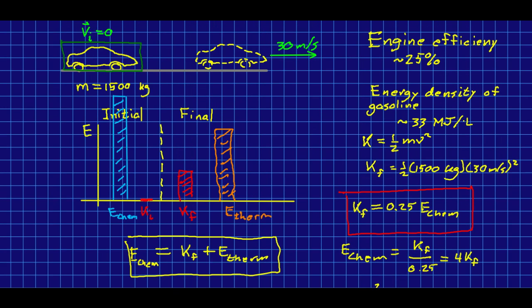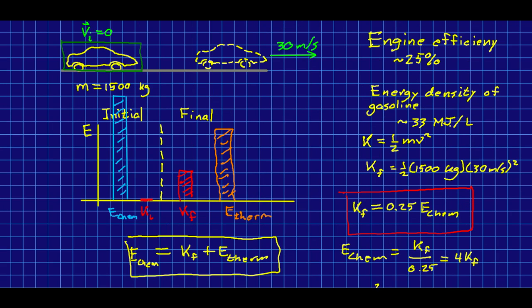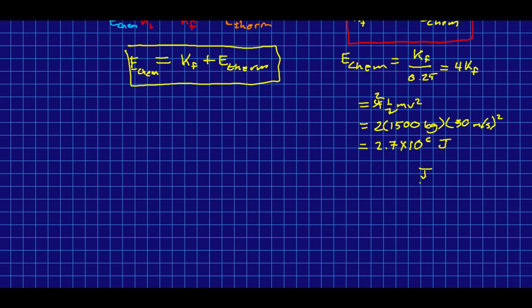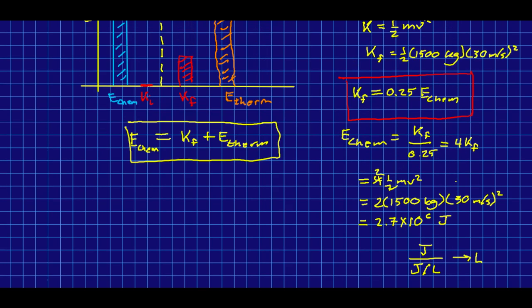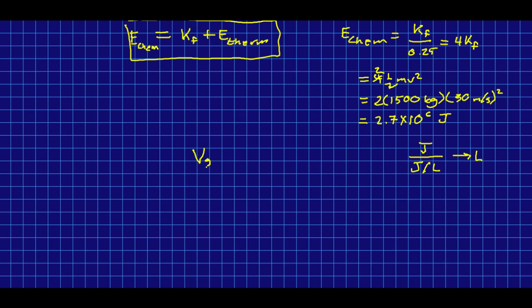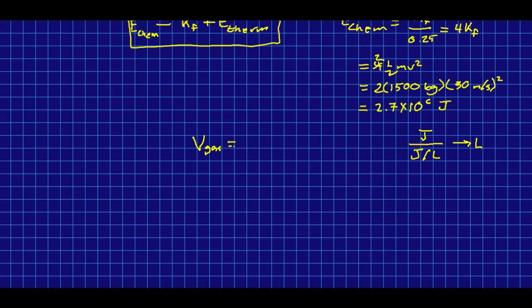But, gasoline has a pretty high energy density. This is the amount of energy per liter of gasoline. And, so, if you just look at the units, if we simply want liters of gasoline, we need to take our energy in joules and divide by our energy density in joules or megajoules or whatever per liter. And, that's going to give us something in liters. You don't need an equation. The units, and doing a unit analysis, tell you how to do it. And, so, there we go. Our volume of gasoline burned just speeding up from rest to highway speed.